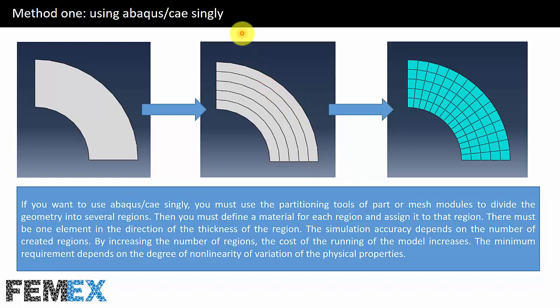Now I want to talk about method one, that is using Abaqus CAE singly. If you want to use Abaqus CAE singly, you must use the partitioning tools of the parts or mesh modules to divide the geometry into several regions. Then you must define a material for each region and assign it to that region. There must be one element in the direction of the thickness of the region. The simulation accuracy depends on the number of created regions; by increasing the number of regions the cost of running the model increases. The minimum requirement depends on the degree of non-linearity of variation of the physical properties.